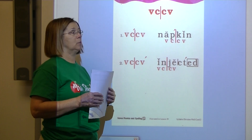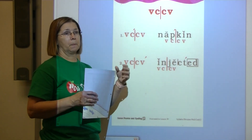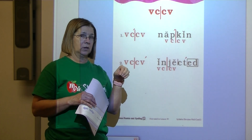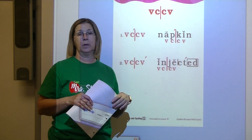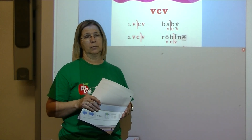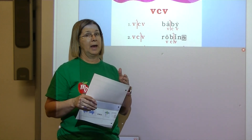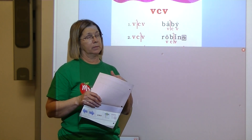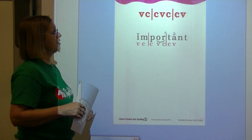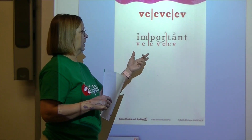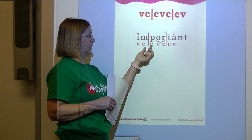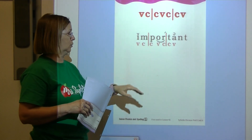Now let's take a look at the syllable division charts. The VCCV pattern: label the vowels, look between them and label the consonants, divide between the consonants, and code each syllable. For a VCV pattern, usually divide after the first vowel, but not always — sometimes you have to divide after the consonant, so you have to try it out. The VCCCV pattern is like VCCV occurring twice in the word, with the center vowel in both patterns — divide between two consonants in each syllable.